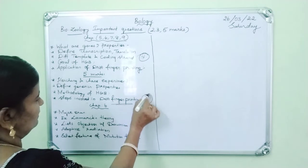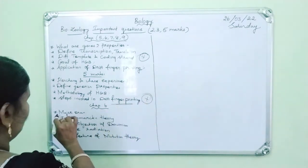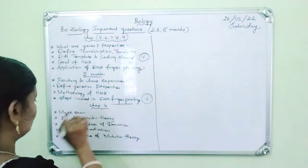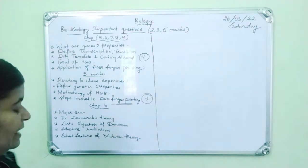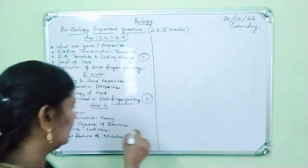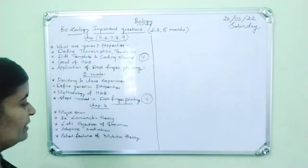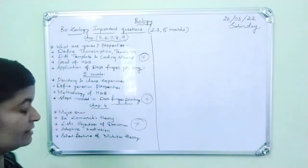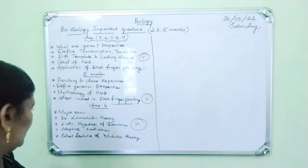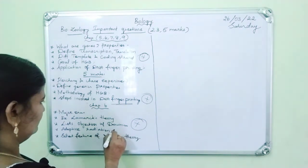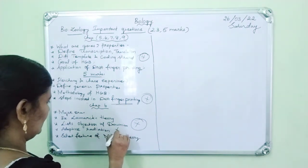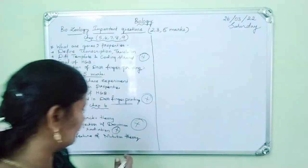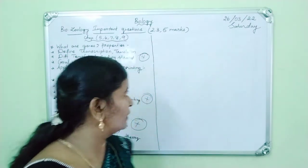Chapter 6: write down the major eras of evolution. Then explain Lamarck's theory — that is an important objective question. Then list the objectives of Darwinism — this is the most important question. Then: what is adaptive radiation? That is a 2 or 3 mark question. Then: what are the salient features of mutation theory? This is an important question.